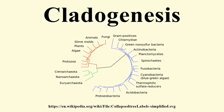Cladogenesis is an evolutionary splitting event where a parent species splits into two distinct species, forming a clade. This event usually occurs when a few organisms end up in new, often distant areas, or when environmental changes cause several extinctions, opening up ecological niches for the survivors.